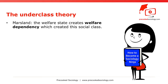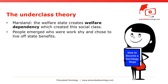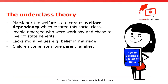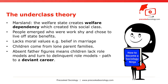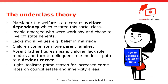People emerged who, in Marsland's view, were work-shy and chose to live off state benefits rather than working. Murray claims this group lacks moral values, such as belief in marriage and the family, which are shared by mainstream society. The absence of a father figure means children lack role models and turn to delinquent role models who encourage and influence these youngsters on their path to a deviant career. Right realists see this so-called Underclass as the prime reason for increased crime rates on council estates and inner-city areas.